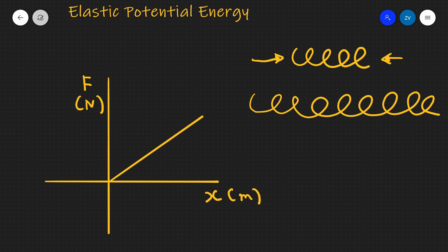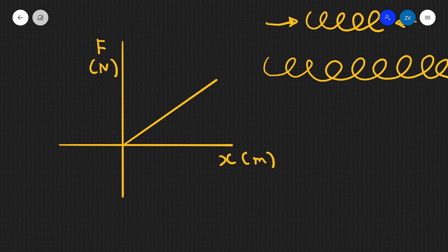In order to answer that, let's imagine we have made an experiment. We have a graph of the force in newtons against the extension x in meters. The work done is the area under the graph because this is a force against extension graph. We can write this down.